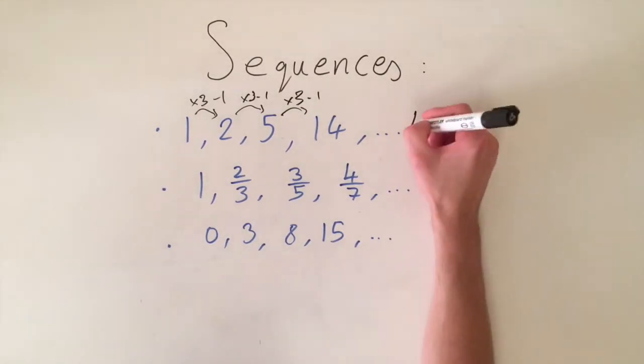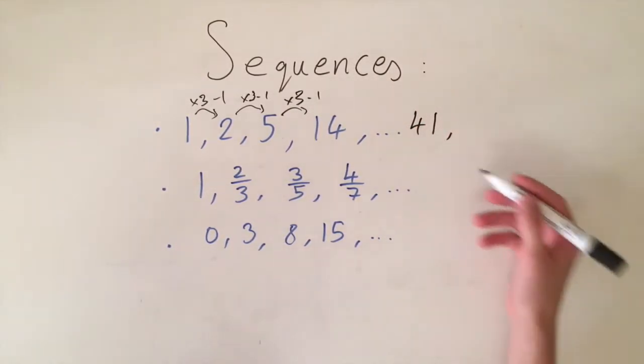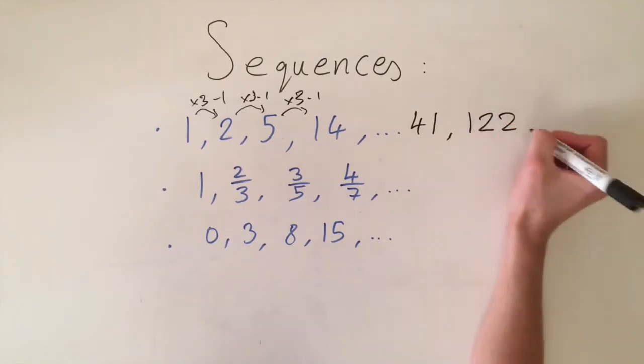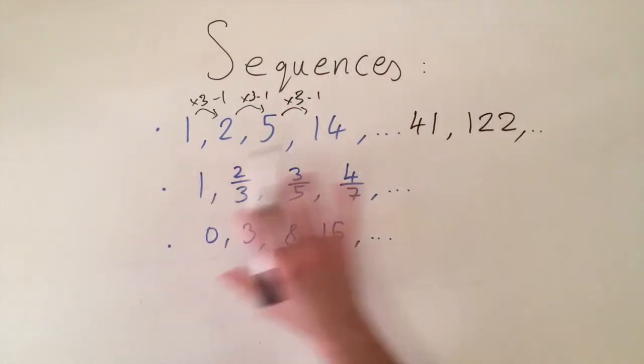So the next term would be 41 and the one after that would be 122. So these are the rules to generate the whole sequence.